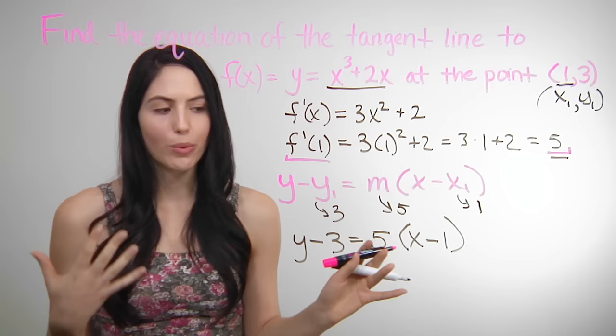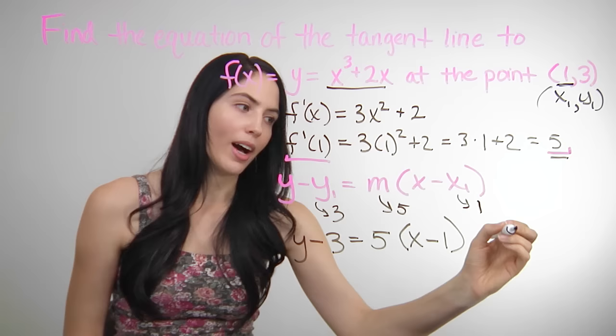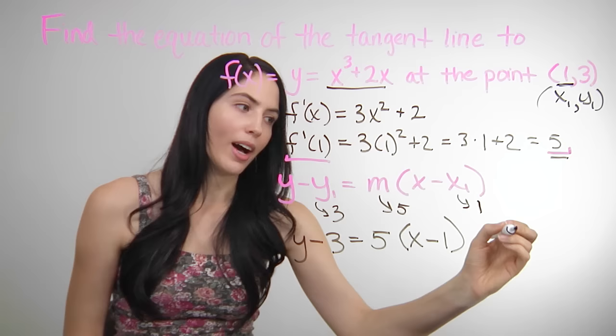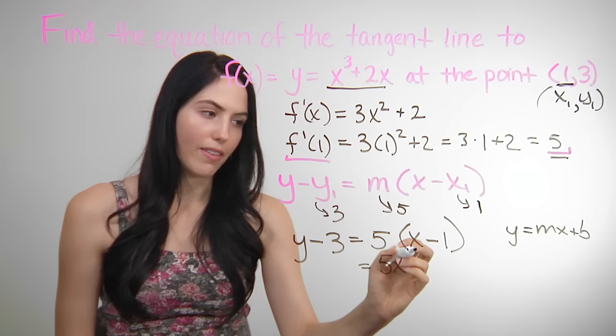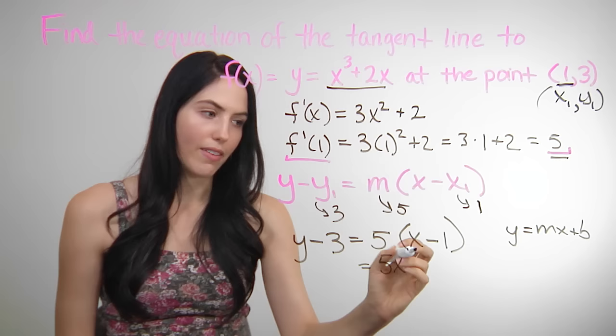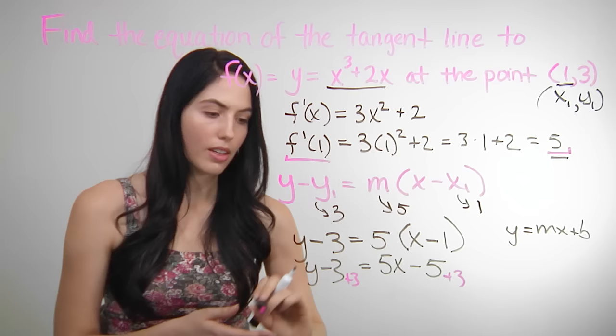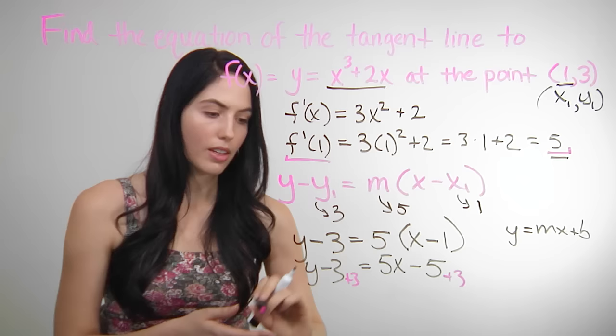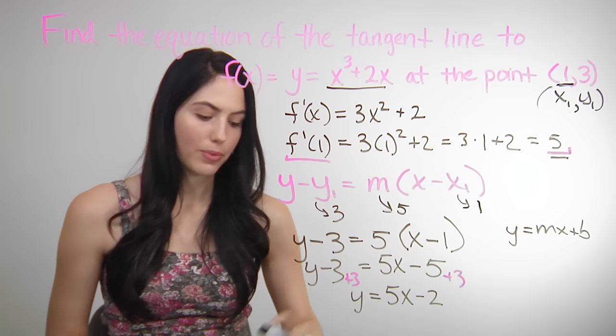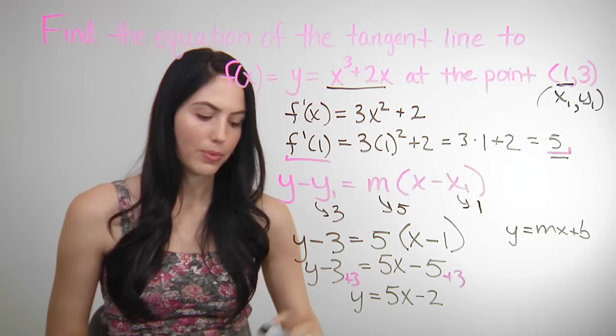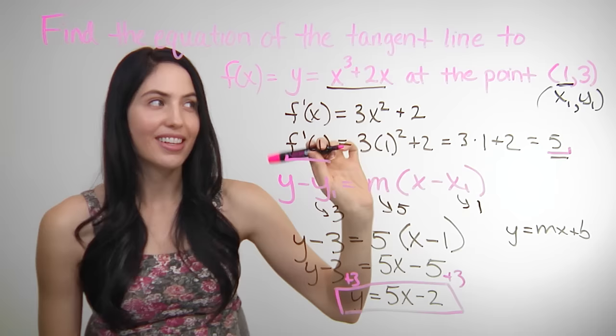Sometimes it's considered simpler to change it to slope-intercept form, or y equals mx plus b form. You can do that with some simple algebra: distribute out the 5 to get 5x minus 5, and rearrange. You get y equals 5x minus 5 plus 3, which is just minus 2. So y equals 5x minus 2 is your equation of the tangent line to this f of x at that point.